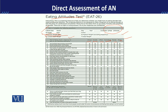For example, item number one is: 'I am terrified about being overweight.' If the client always thinks this way, they will mark 'Always'; if they think it sometimes, they will mark 'Sometimes.' Similarly, item: 'I feel that others would prefer if I ate more' — wherever they feel this applies, they mark it there. Likewise for items like 'avoid foods with sugar in them' — if they usually do this, they mark 'Usually'; if rarely, they mark 'Rarely.' The client reads all items and continues marking.